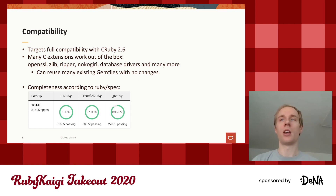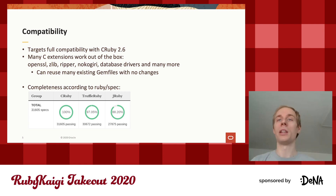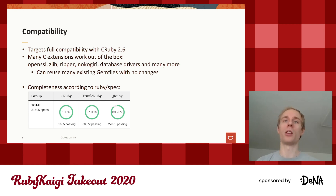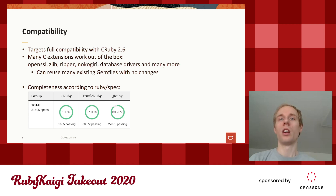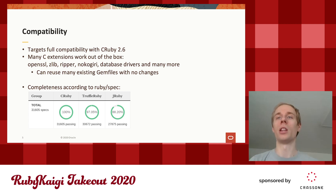In terms of compatibility, TruffleRuby is getting pretty good. It targets Ruby 2.6, and many C extensions work out of the box — OpenSSL, Zlib, Nokogiri, many database drivers, and so on. They just work, and there's a good chance that if you try a random C extension, it might just work on TruffleRuby. This is a big advantage: if you want to try your existing application on TruffleRuby coming from CRuby, it will probably work without changes to the gem file, or with very minimal ones.